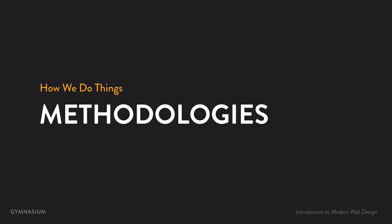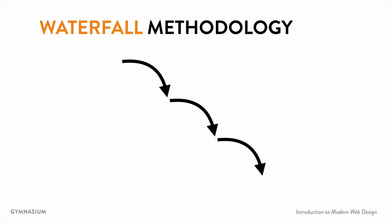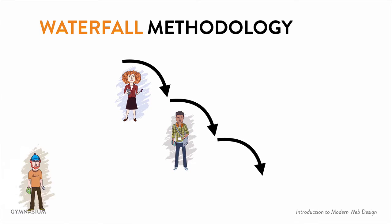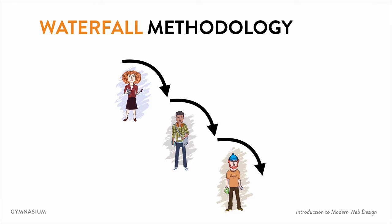We're going to start digging into HTML in the next lesson, but before we get there, I want to talk about two ways in which teams work together. The first methodology is the waterfall methodology. In waterfall, one person finishes their part of the project and then hands it over to the next person in the process, and so on and so forth. Most large organizations use this process because they've used it for years — it's very similar to the factory model of an assembly line.